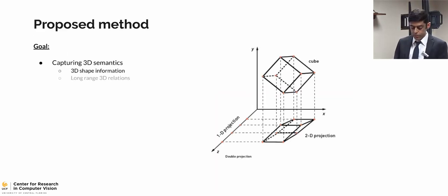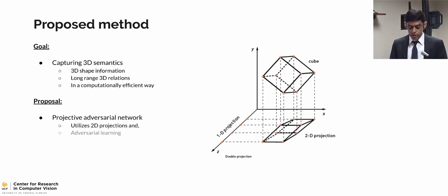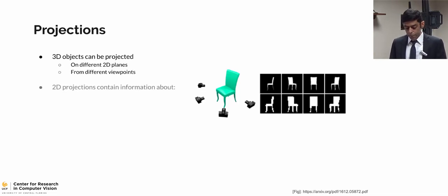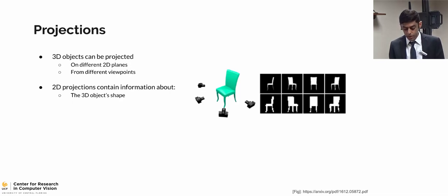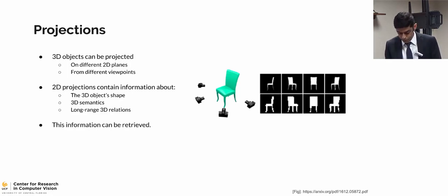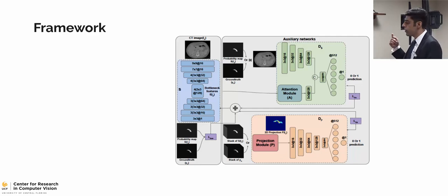3D objects can be projected onto different 2D planes from different viewpoints. Based on the projection function we define, these projections include information about the object shape, semantics, and long-range 3D relationships. The framework is composed of three networks: the segmenter and two auxiliary networks. The two auxiliary networks are only used during training — at test time we only have one single 2D network. Our segmenter is a simple encoder-decoder architecture. We purposely used a very simple network to show that with the correct form of supervision, even a simple network has enough parameters to capture the complexity of the task.